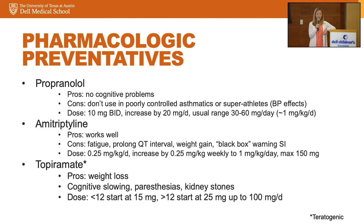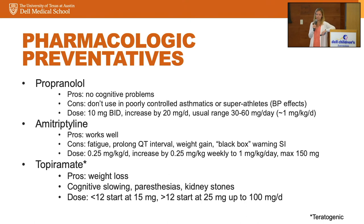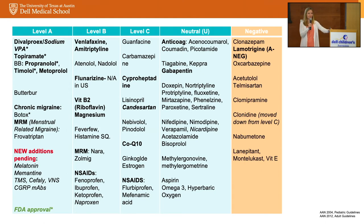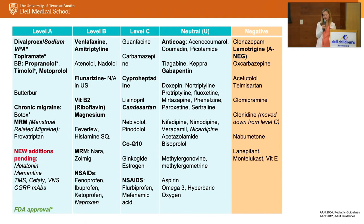Once I try a nutraceutical, I next move to a pharmacologic agent. These considered first-line options include propranolol, amitriptyline, and topiramate. Topiramate is the only FDA-approved migraine preventive in children, approved down to age 12 — every other medication I've mentioned would be off-label. There are so many growing options available, and figuring out the best next treatment option for each patient is what I love to do.